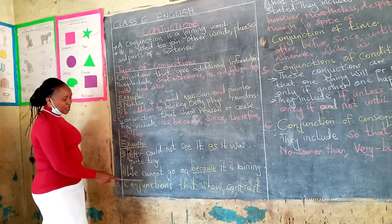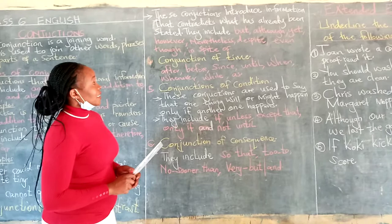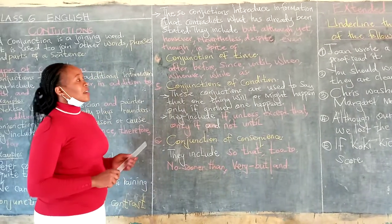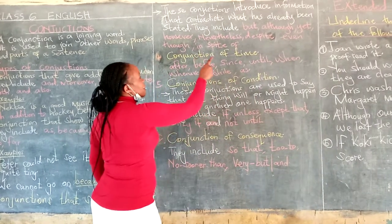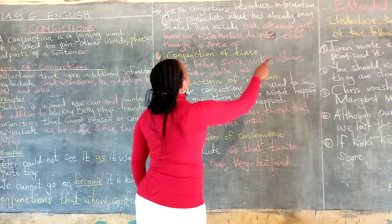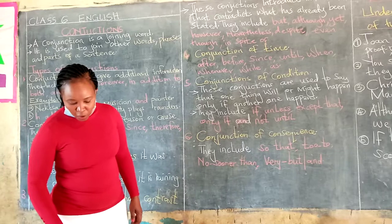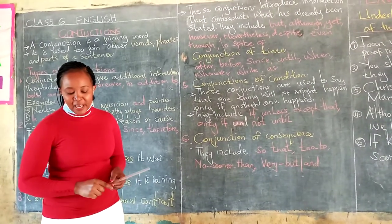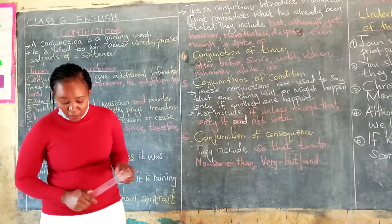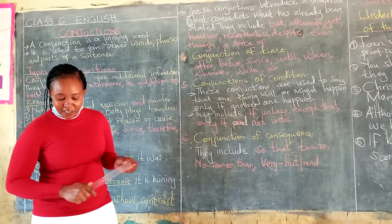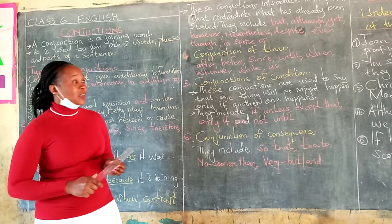Let's see type number three: conjunctions that show contrast. Now, these conjunctions introduce information that contradicts what has already been stated. They include: but, although, yet, however, nevertheless, despite, even though, and in spite of. Listen to my sentences. Although Vincent is short, he is a good scorer — so we have the word 'although' as our conjunction. Despite his absenteeism, he performed well in school — so the word there is 'despite'.